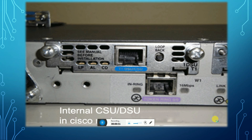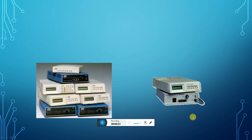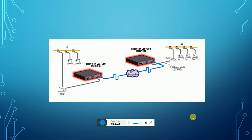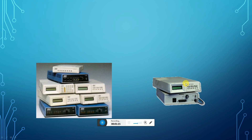This is the internal CSU/DSU from Cisco. This is the Smart 64K CSU/DSU. This is the router connecting the client's LAN to the DSU. From the 64K CSU/DSU, it is connecting with the router and LAN to other systems. This covers all the CSU/DSU units.